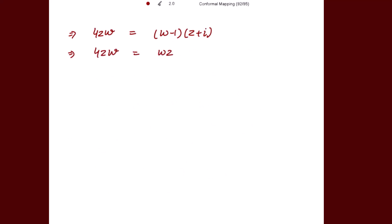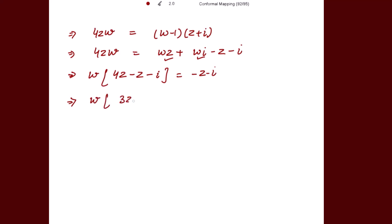Expanding the right-hand side: 4zw = wz + wi - z - i. Collecting the w terms on the left: w(4z - z - i) = -z - i, which gives w(3z - i) = -z - i.